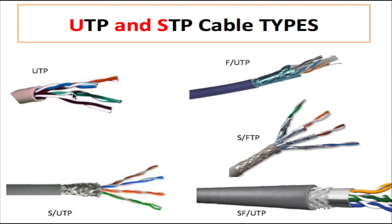Each one of these pairs has a different ratio of twists. The first one may be a ratio of 1.1 turns per inch, the second one 1.2, 1.3, 1.4, and so on. Every Ethernet cable has four pairs within it.